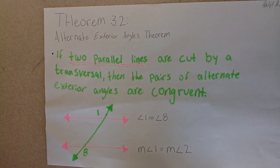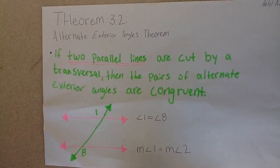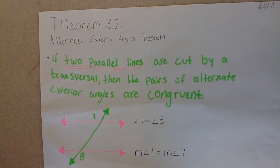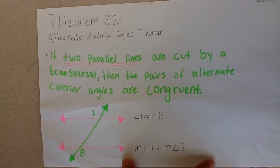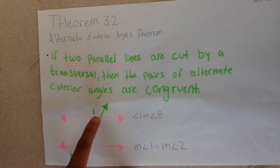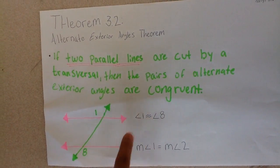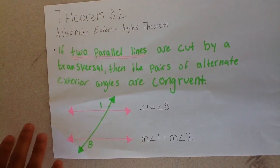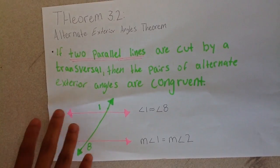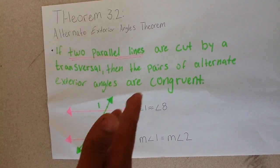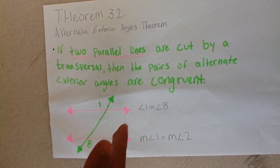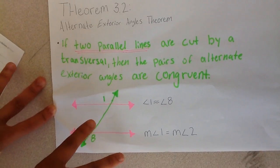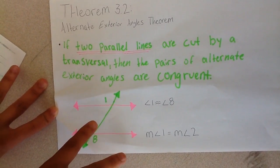then the pairs of alternate exterior angles are congruent. For example, here angle 1 is congruent to angle 8, because it is cutting these two parallel lines. And that's it.